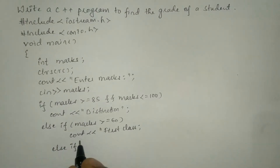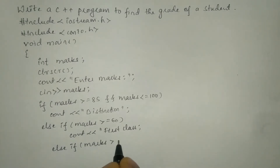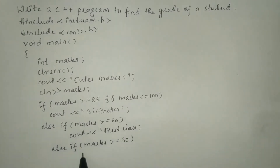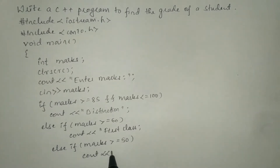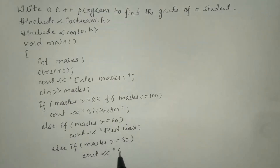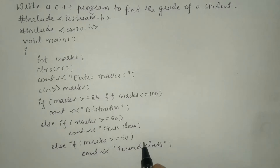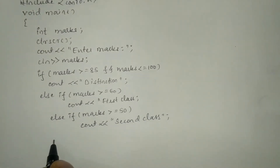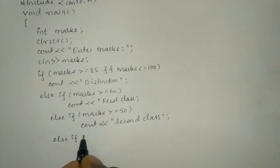If the first class condition is not true, we are going to check one more condition using else if: marks is greater than or equal to 50. If this is true, then it has to print 'second class' using cout with the stream insertion operator, with 'second class' in double quotation marks and a semicolon.